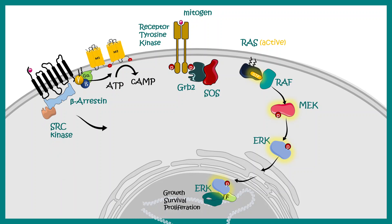SRC kinase can further phosphorylate ERK, and we know ERK is downstream to the MAP kinase pathway. ERK can translocate into the nucleus and activate genes important for growth, survival, or proliferation. This is how we can appreciate how different pathways can crosstalk at different levels.